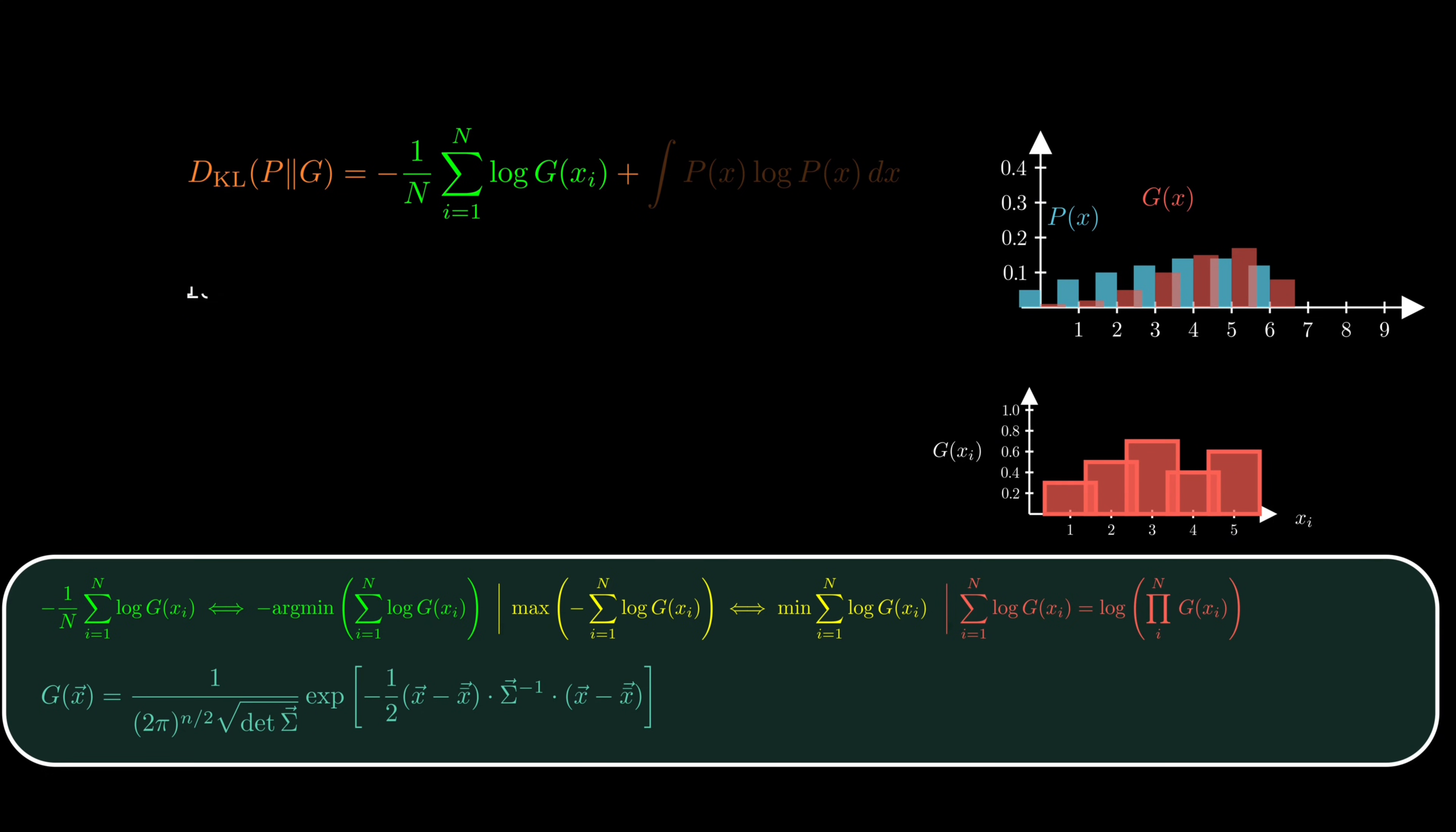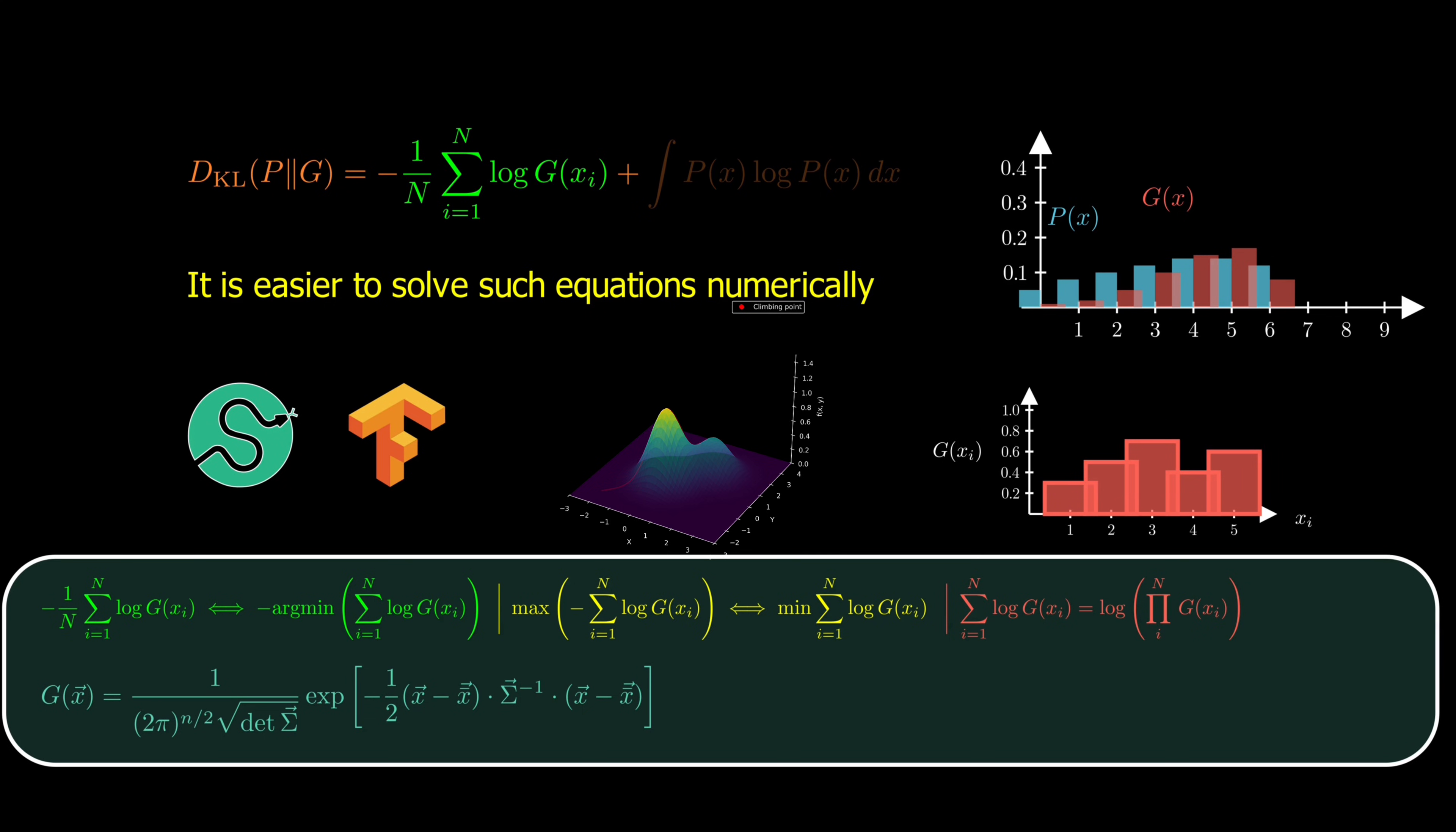For most probability distributions, the resulting equations can't be solved analytically, so we have no option but to rely on numerical methods like gradient ascent. And the good news is that most of these methods are implemented in standard Python libraries, so you can use them with a single line of code.